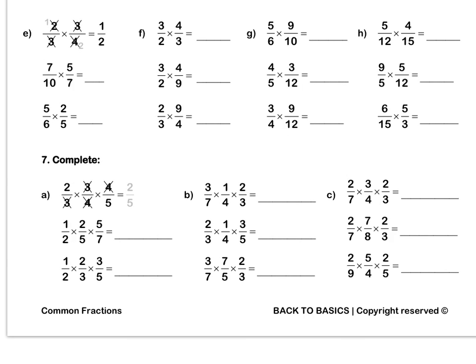Press pause to complete up to question D by yourself. Question E: we have 2 thirds times 3 quarters. We must simplify in our question until we can't anymore. 3 and 3: divide top and bottom by 3 to get 1 and 1. Then 2 and 4: 2 divided by 2 is 1, 4 divided by 2 is 2. Then when we multiply out, our answer is 1 half in its simplest form.